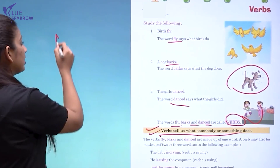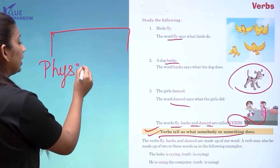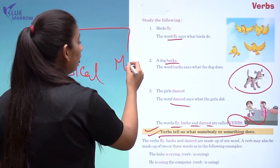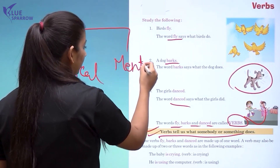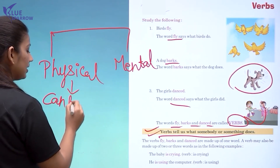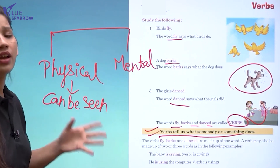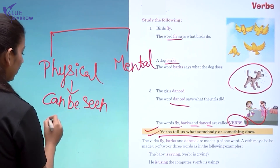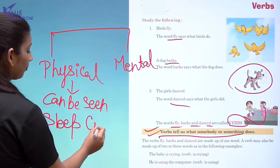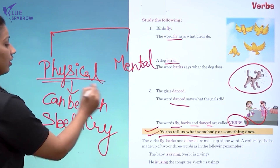Students, we got to know about verbs. Verbs can be physical as well as mental. Physical verbs are actions that can be seen — actions you can observe happening. For example, 'sleep' and 'cry' — all these are physical verbs.